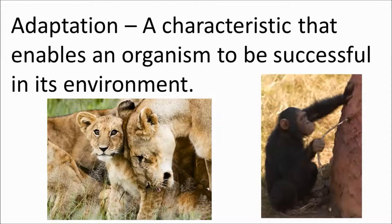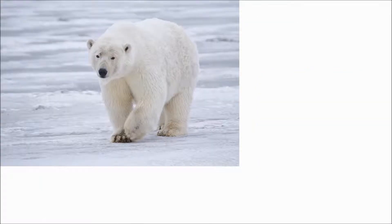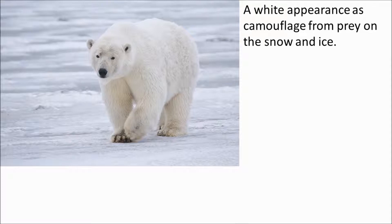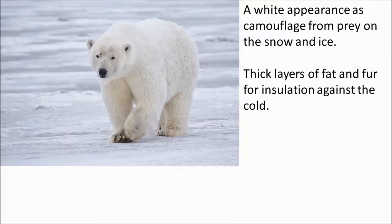Let's have a look at some examples. A commonly used example when people are talking about adaptations is the polar bear. It's got a white appearance to camouflage it from its prey on the snow and ice, so it can creep up on its prey — this helps the polar bear catch its prey, feed, and ultimately survive. Successful hunting also allows the polar bear to feed its offspring. Thick layers of fat and fur keep the bear from dying in extreme cold conditions.